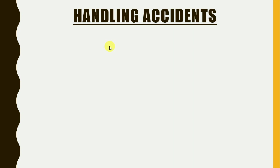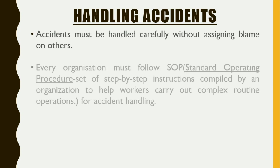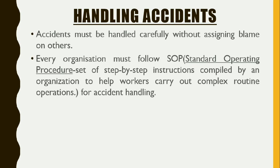Next, how do we handle accidents? Sometimes when accidents happen on the road or at a workplace, people start blaming each other. The first and foremost thing is that the accident must be handled carefully without assigning blame, because while blame is being put on others, someone else's life may be at risk. Second, every organization must follow SOP — Standard Operating Procedure.